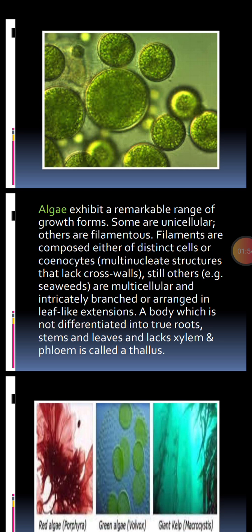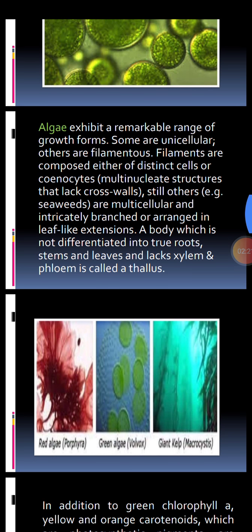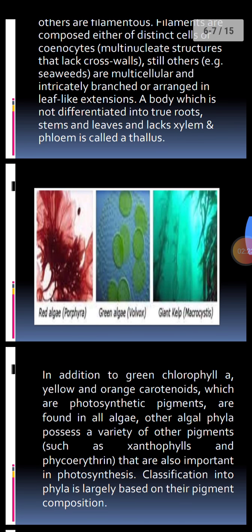Seaweeds are multicellular and intricately branched or arranged in leaf-like extension forms. A thallus is defined as a plant body that is not differentiated or specialized into true roots, stems, and leaves, and lacks xylem and phloem vascular tissues. Such organisms are said to be thalloid.